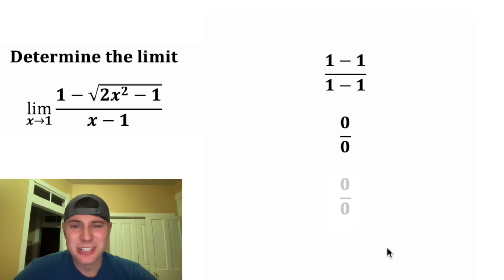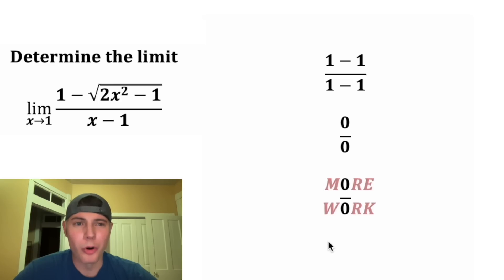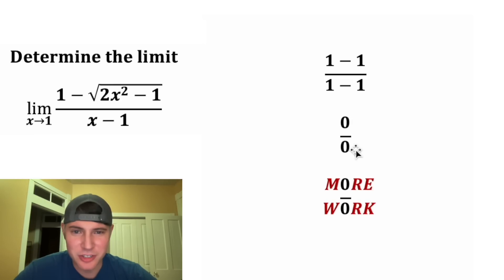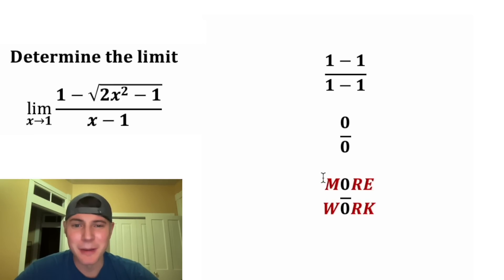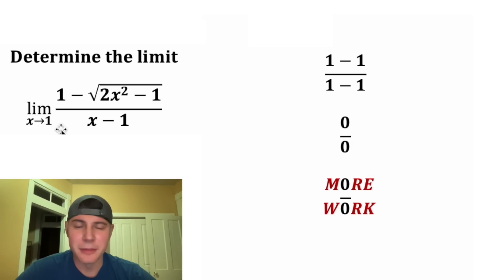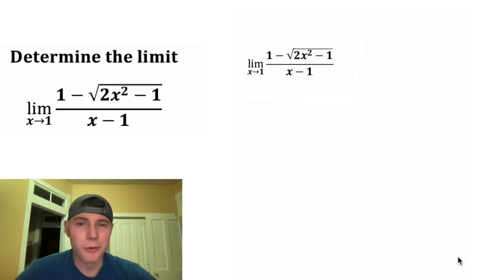So let me show you something. If you ever see 0 over 0, that just means more work. I turned these two zeros into a reminder that says "more work." So if you ever see the indeterminate form 0 over 0 when doing a limit, it just means you have more work to do. So let's do that.